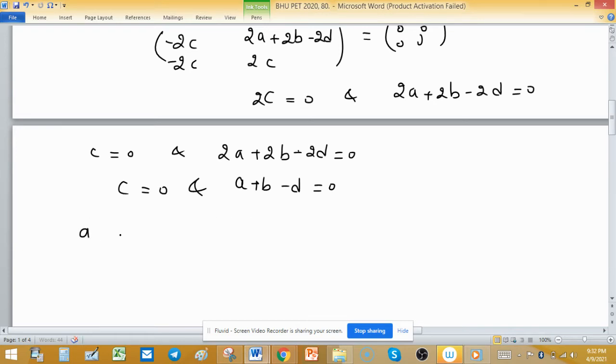It means that matrix A has this structure: A is free, B is also free, the value of C is 0, and D equals A plus B. So this is the structure of element A which belongs to the kernel.